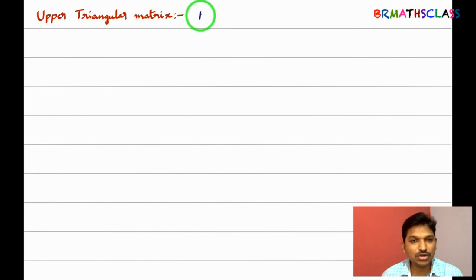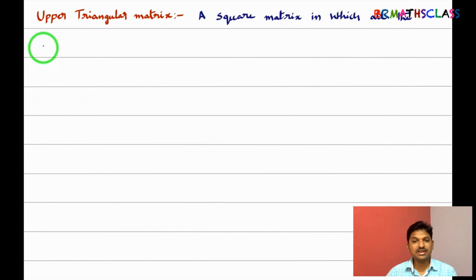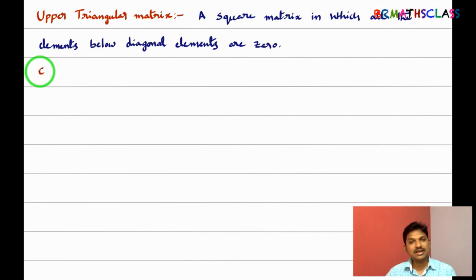First we will learn about upper triangular matrix. What is upper triangular matrix? It is a square matrix — it is important that it is a square matrix. A square matrix in which all the elements below the diagonal elements are zero is called upper triangular matrix.